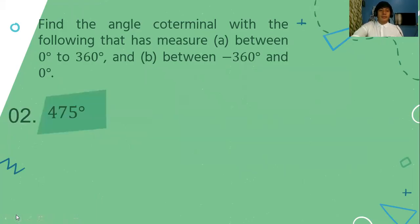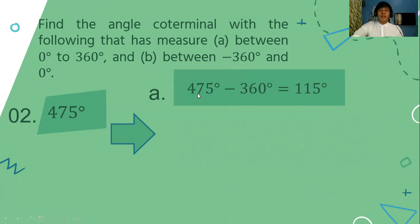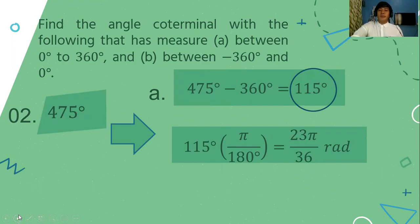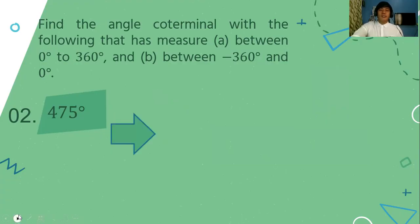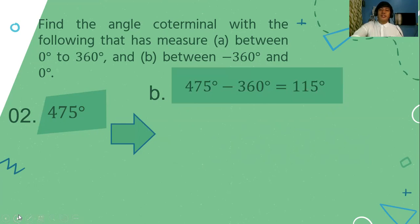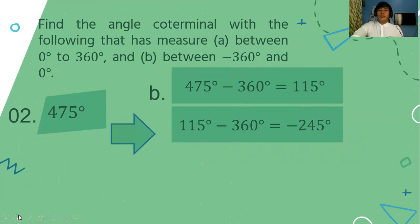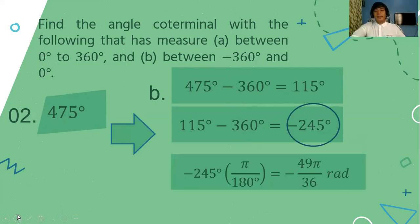For the second illustrative example, the given angle is 475 degrees. For the positive coterminal angle: 475 minus 360 equals 115 degrees. Converting 115 degrees multiplied by pi over 180 gives 23pi over 36 radians. For the negative coterminal angle, subtract 360 from 115 to get negative 245 degrees. Converting negative 245 degrees into its radian measure gives negative 49pi over 36 radians.